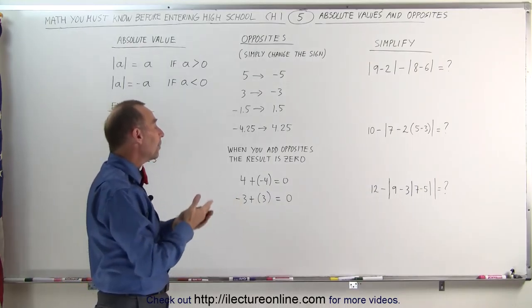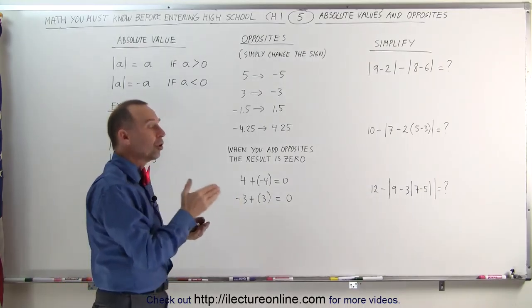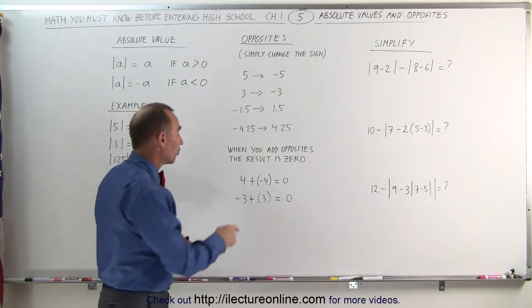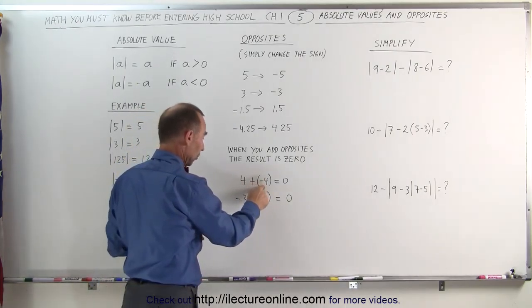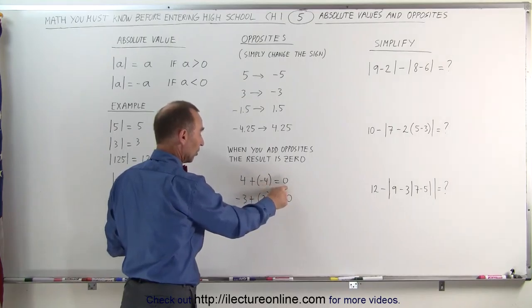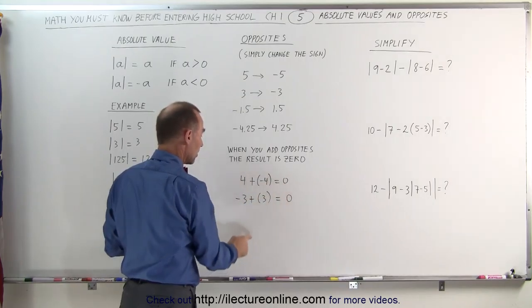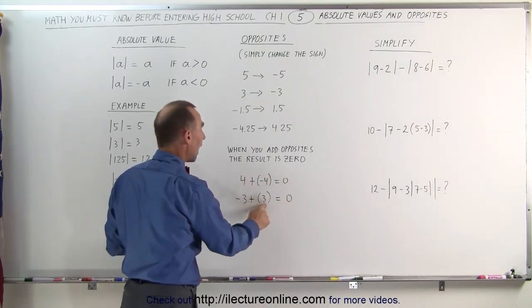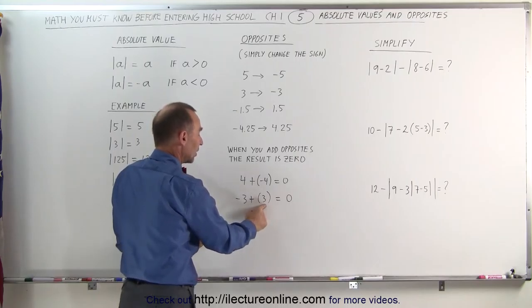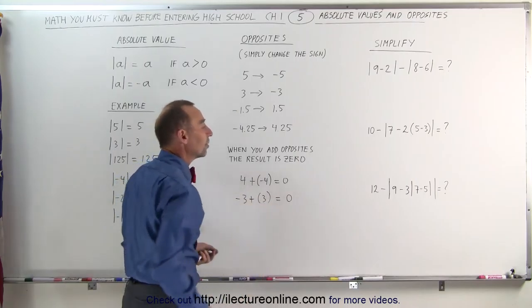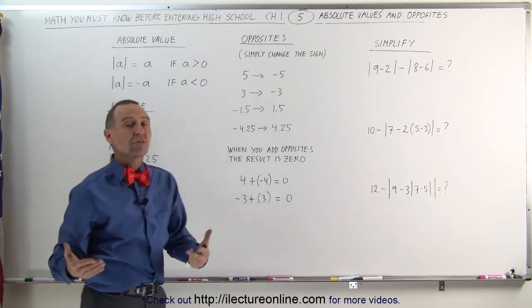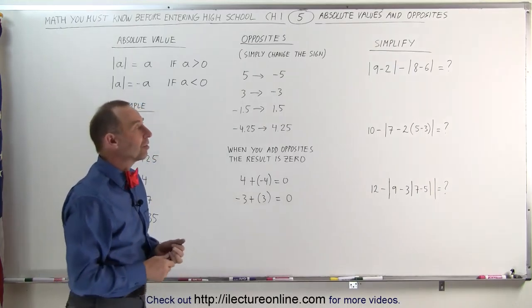When you add two opposites, the result will always be 0. Here you have the number 4 and the opposite of the number 4, which is a negative 4. If you add them together, you get 0. Here you have the number negative 3 and the opposite of the number negative 3, which is a positive 3. When you add them together, you get 0. Therefore, when you add opposites, you always get 0.